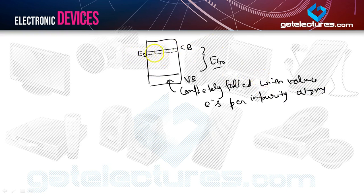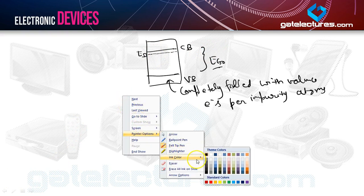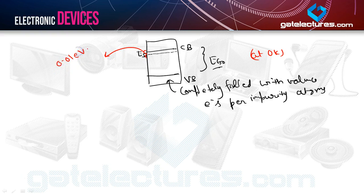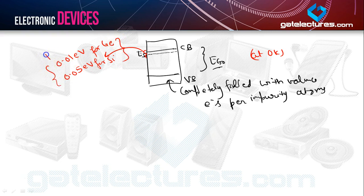It is important to note that at 0 Kelvin, the conduction band is completely empty and the valence band is completely filled. The energy gap between the donor level and the conduction band is 0.01 electron volt for germanium and 0.05 electron volt for silicon. This gap is independent of temperature.